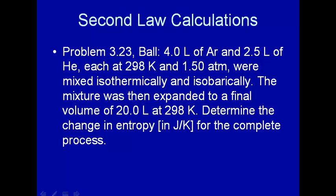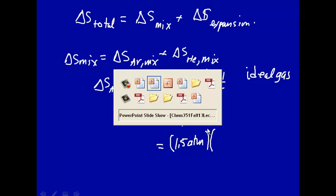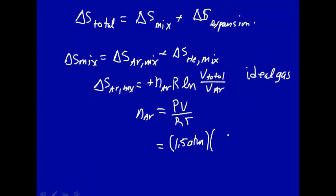The volume, temperature, and pressure of argon are given and we're assuming an ideal gas so we can use number of moles equals PV/RT. Pressure was 1.5 atmosphere. The volume of argon was 4.0 liters. The appropriate value of R is 0.0821 liter atmosphere per mole kelvin.